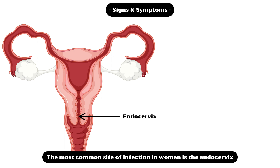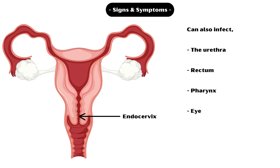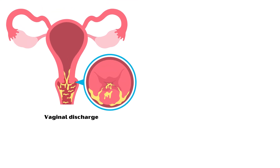The most common site of infection in women is the endocervix. In addition, gonococcus can also infect the urethra, rectum, pharynx, and eye. Most common symptoms in women include vaginal discharge, which is often described as a thin, purulent, malodorous discharge.